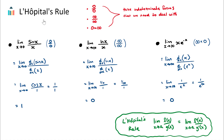Very interesting story about L'Hopital's rule: it was actually discovered by a different mathematician, Johan Bernoulli. But L'Hopital was a very rich man and he bought the rights to this rule, and now it's named after him. Interesting story.